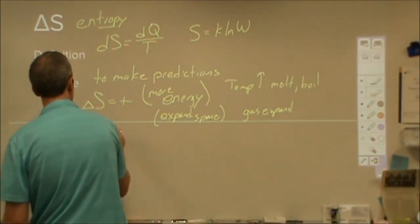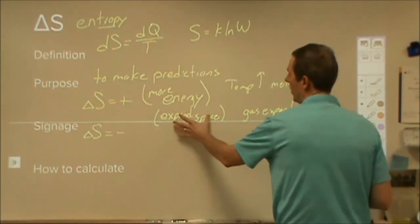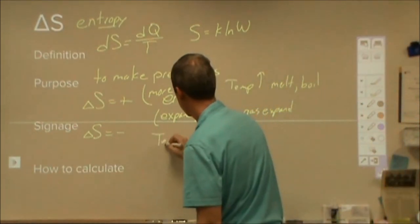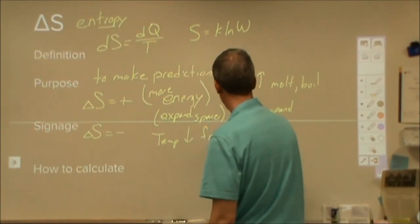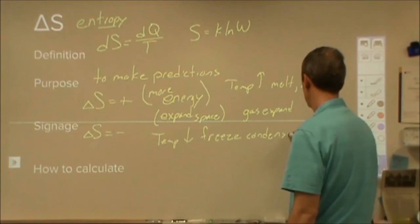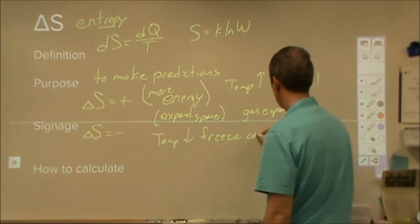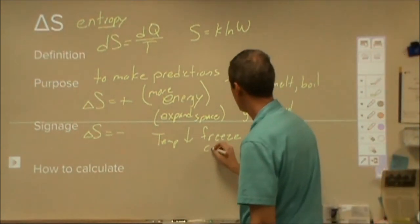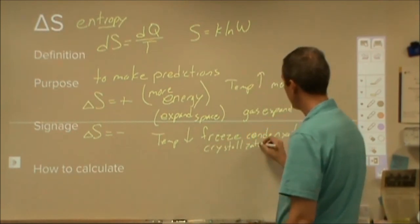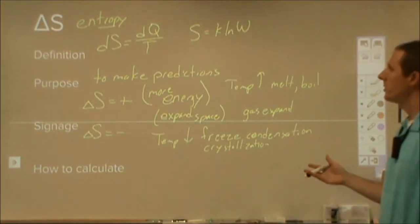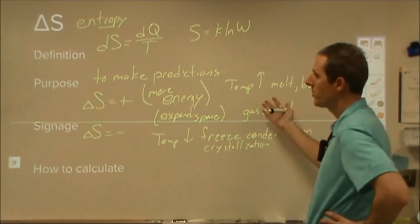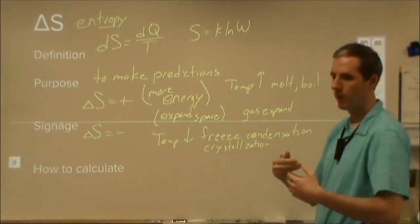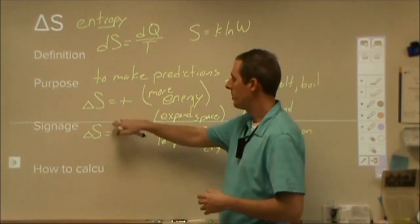If delta S is negative, entropy is decreasing — we see less energy or a decrease in volume. Examples include temperature decreasing, freezing, condensing, deposition, a gas contracting, or crystallization. One overriding theme: gases have a lot of entropy and a wide distribution of energy. So if you end up making more gas molecules than you started with, or ending up with fewer gas molecules, that will generally affect your entropy change more than anything else.